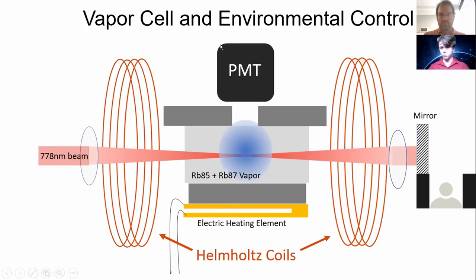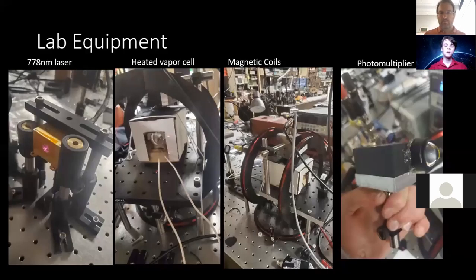The sensor that we're using to detect atomic fluorescence, if we see fluorescence, we know that our laser beam is at the right frequency. So the sensor that we're using to detect fluorescence is something called a photomultiplier tube. It's basically just a very sensitive detector.